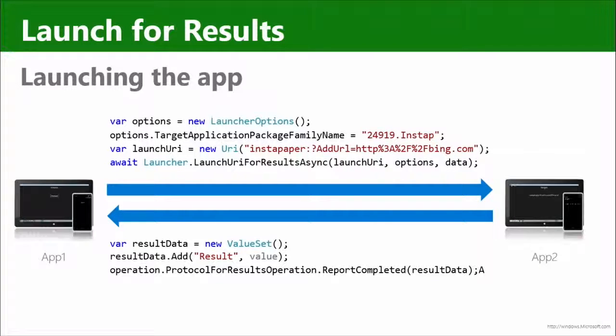In Windows 8.1 there was no way for the called app to directly respond back to the caller with a result. You could do it back-to-back with URI activations but it was so unreliable. This is the right and proper way to do it, and it's been a big ask from developers. You now have LaunchUriForResultsAsync and the same target application package family name to send specifically to one app.